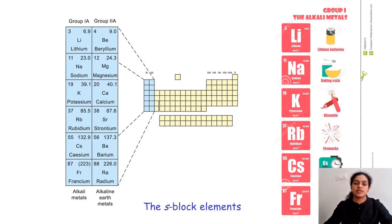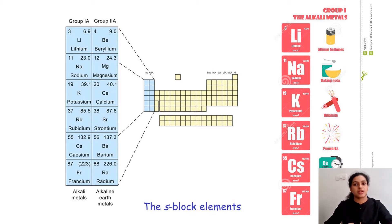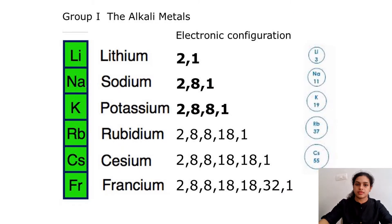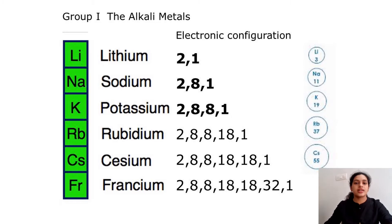The S-block elements are those in which the last electron enters the S subshell. There are two main groups under S-block: group 1 and group 2, otherwise known as alkali and alkaline earth metals. The elements are lithium, sodium, potassium, rubidium, cesium, and francium. All these elements have a single electron in their valence shell.